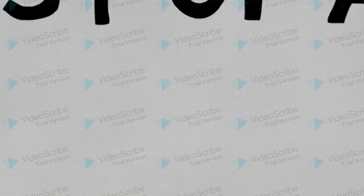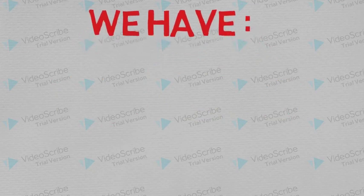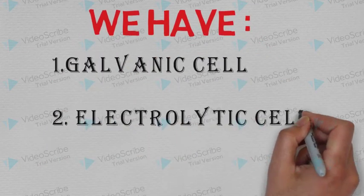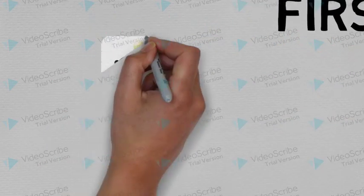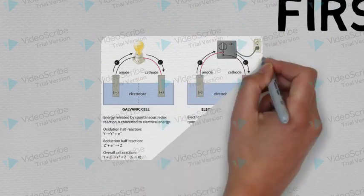First of all, we have Galvanic cell and Electrolytic cell, but what is the difference between them?